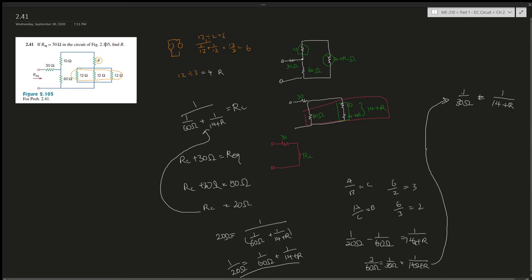And then we cross multiply. So 1 times this, this times this, so it would just be 14 plus R equals 30 ohms. And then now we solve for R, minus 14 by both sides, it's going to give us 16 ohms. And that's how we find R.